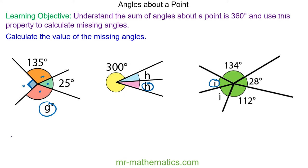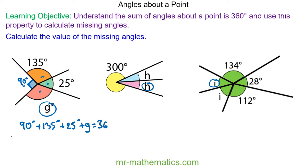The right angle symbol means it's 90 degrees, so we have 90 degrees plus the 135 plus the 25 plus angle g is equal to 360.